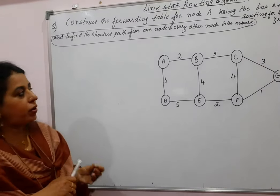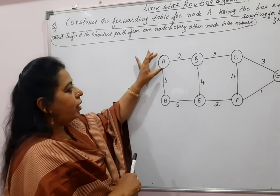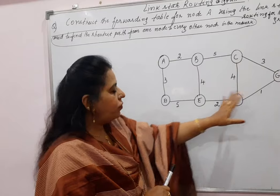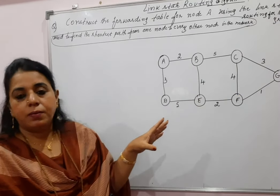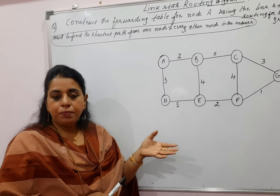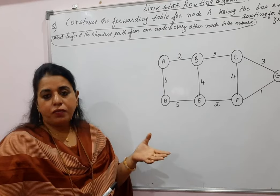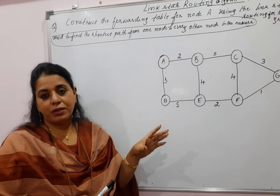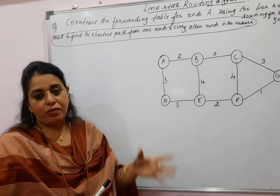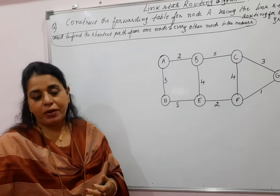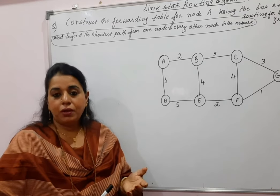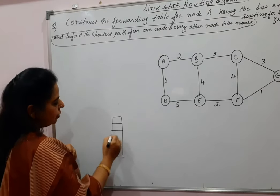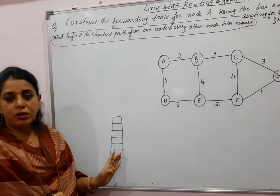If you take node A, what is the shortest path to reach B, to reach D, and so on for all nodes in the network? In distance vector routing, the forwarding table is constructed to find the shortest path to the destination. Similarly, in link state routing the main aim is to find the shortest path to every other node, meaning every node has a forwarding table. The difference is in the approach: how the forwarding tables are constructed.